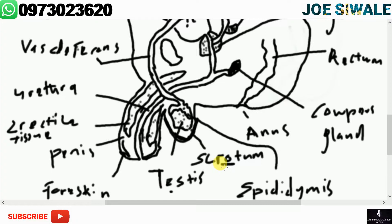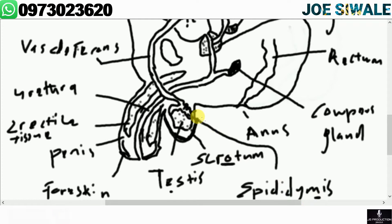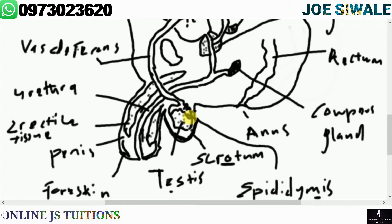The epididymis is the site where mature sperm are temporarily stored. After sperm have been produced in the testes and matured, they are temporarily stored in the epididymis. The epididymis is long and coiled to increase the space for storage of sperm.